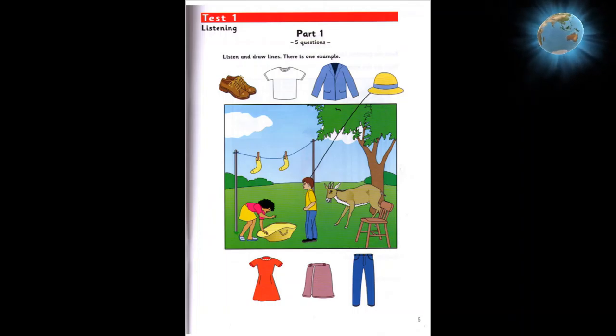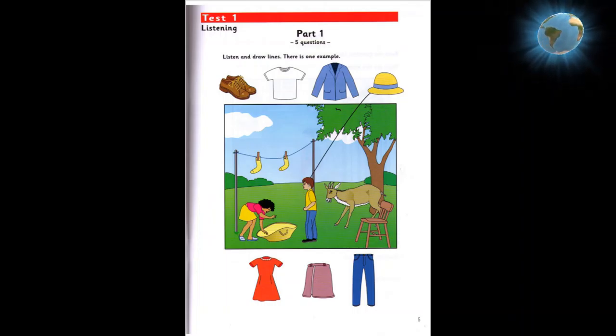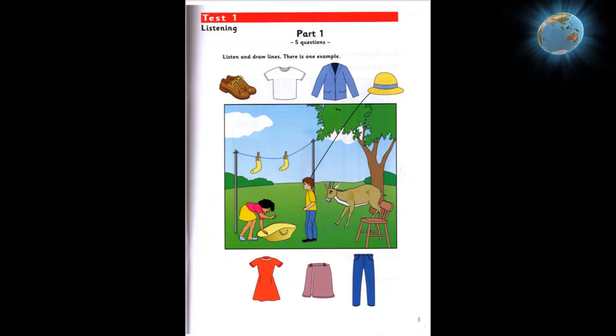Five. And now put the t-shirt behind the chair. The t-shirt? That's right. Okay. It's behind the chair. That is the end of part one.